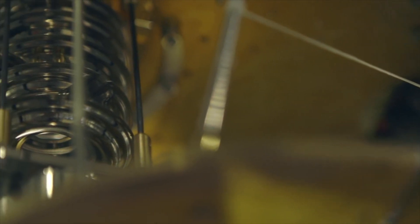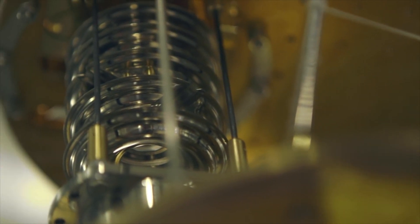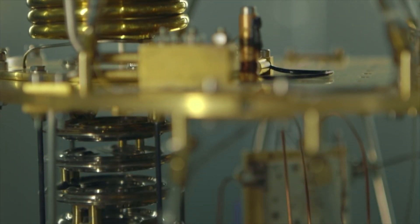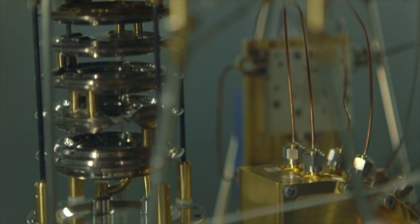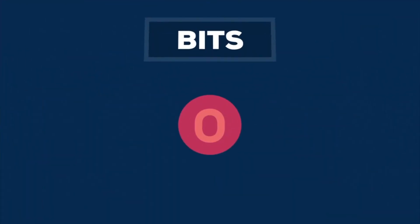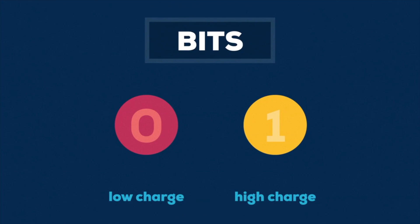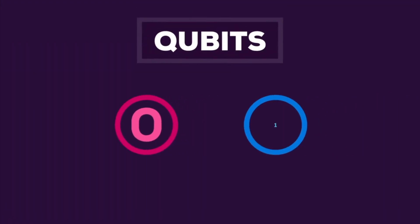We can use this concept of superposition to free computers from having binary constraints. Quantum computers use particles magnetically suspended in near absolute zero temperatures to represent not bits, but qubits. Instead of representing either one or zero, they can also represent both simultaneously.